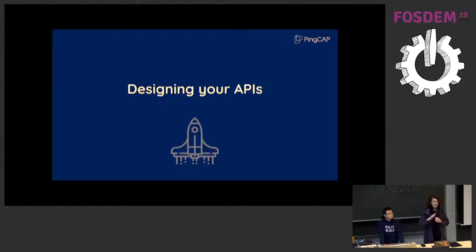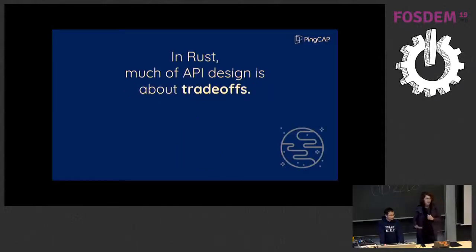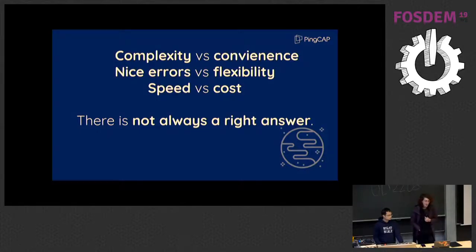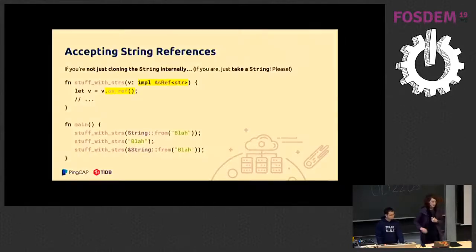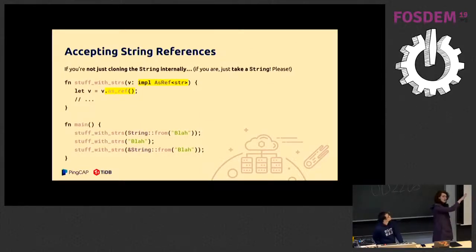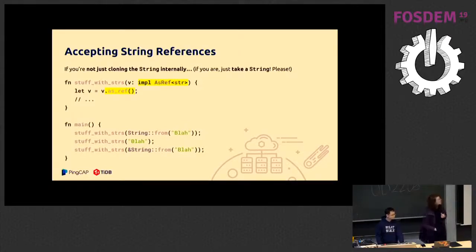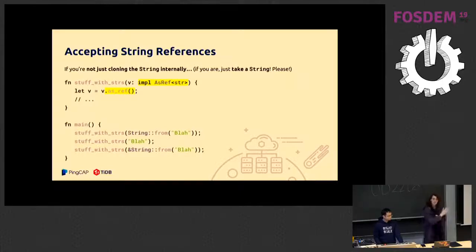Designing your APIs: when you first make your API, you probably go for the simplest possible, and that's good. But Rust has a lot of trade-offs in real-world use — complexity versus convenience, readable errors versus flexibility, speed versus costs. For example, if you want to accept references to strings and you're actually cloning internally, take a String — do not clone without the user knowing. But if you're taking a string reference, you can use impl AsRef<str>, and in your code just call as_ref(). This means you can pass a String, a string reference, or anything that implements AsRef<str>.